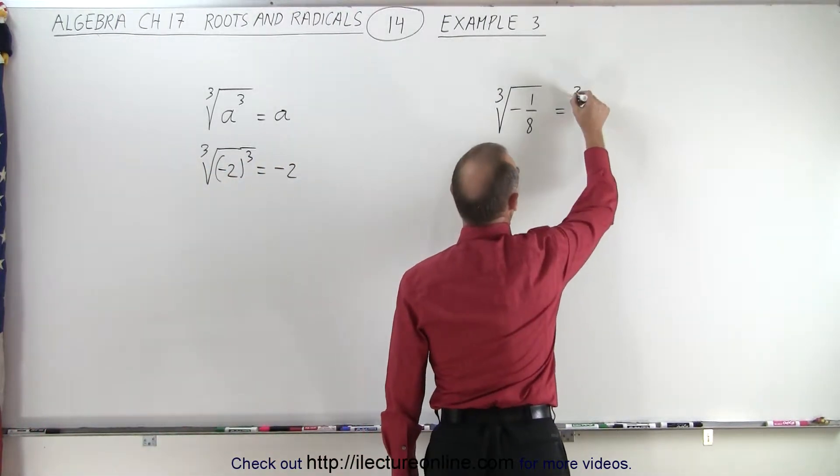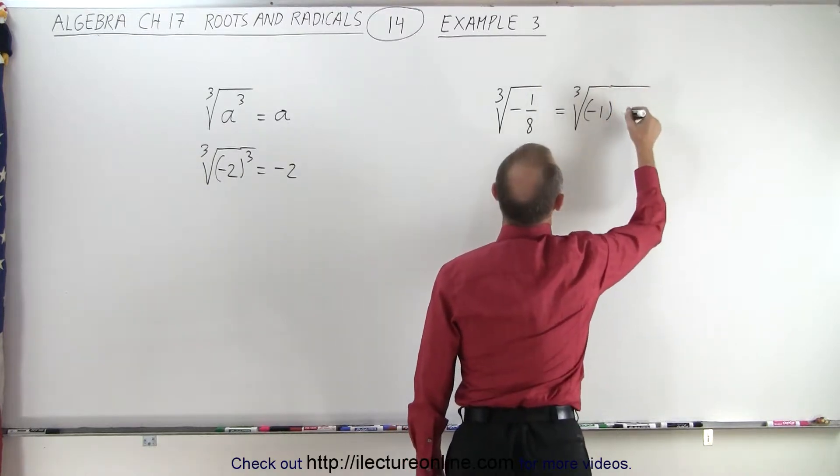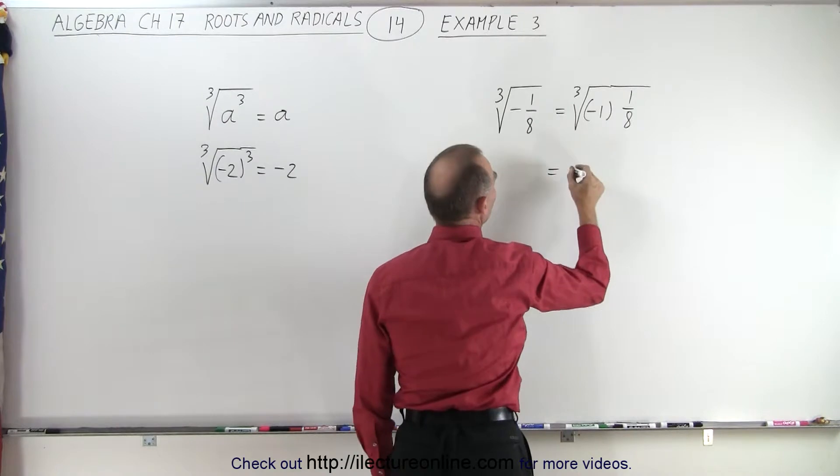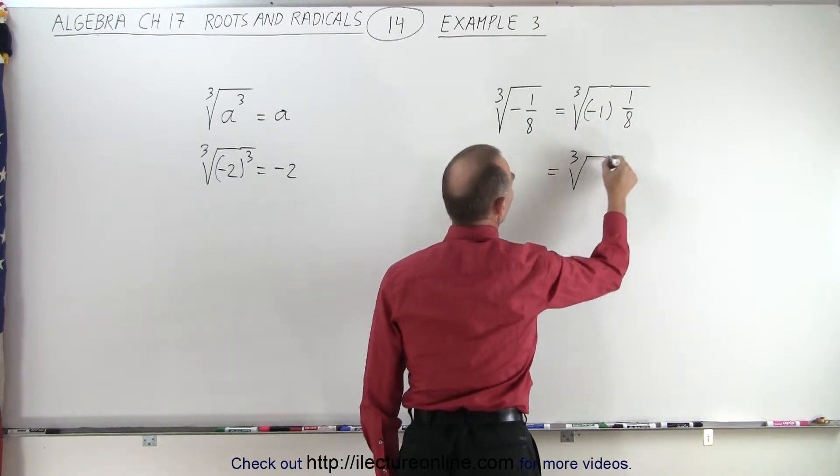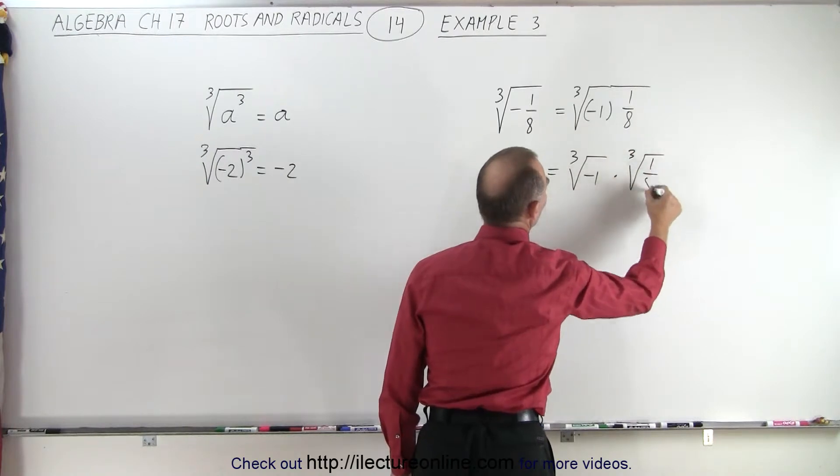This can be written as the product of the cube root of negative 1 times 1 over 8, and then we can separate the two. We can write this as the cube root of negative 1 times the cube root of 1 over 8.